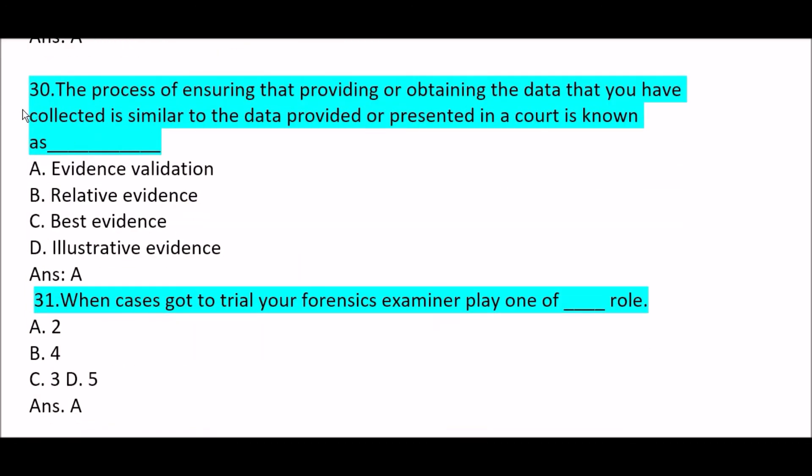Next question: the process of ensuring that providing or obtaining the data you have collected is similar to the data provided or presented in court is known as — Option A: evidence validation. Option B: relative evidence. Option C: best evidence. Option D: illustrative evidence. Correct answer is Option A — evidence validation.